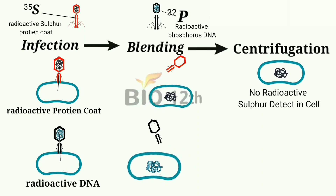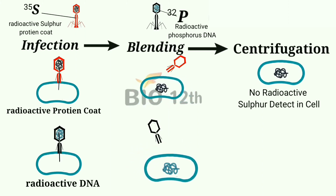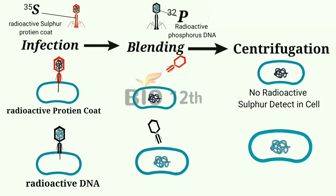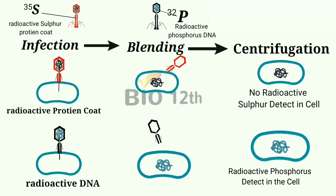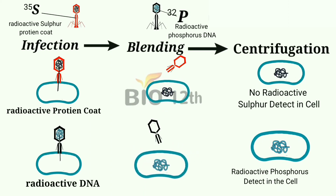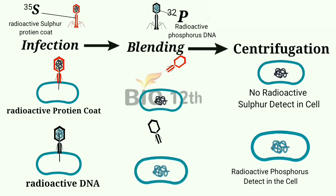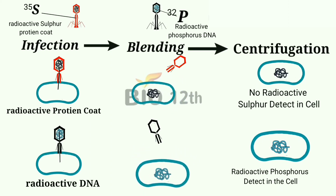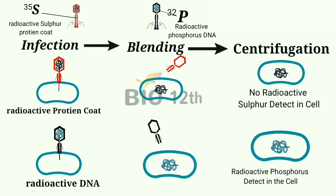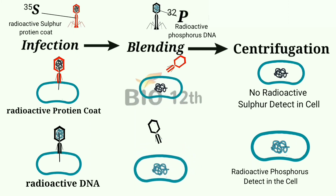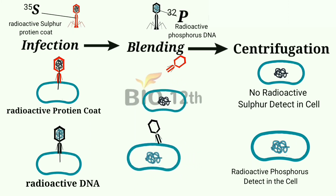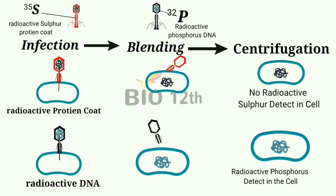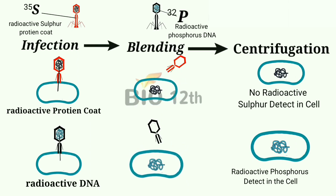In cell 1, no radioactive sulfur was detected in the cell, because the radioactive sulfur is present in the protein coat which was removed. In cell 2, radioactive phosphorus was detected in the cell because it is present in the DNA.